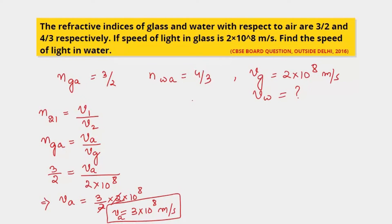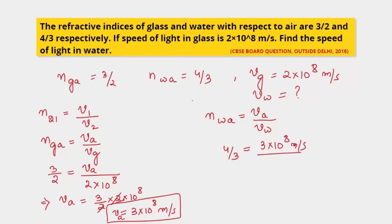Now we will find out the velocity of light in water using the same formula. The refractive index of water with respect to air equals the velocity of light in air divided by the velocity of light in water. The refractive index of water with respect to air is 4/3, and the velocity of light in air is 3×10⁸ m/s. We have to find the velocity of light in water.